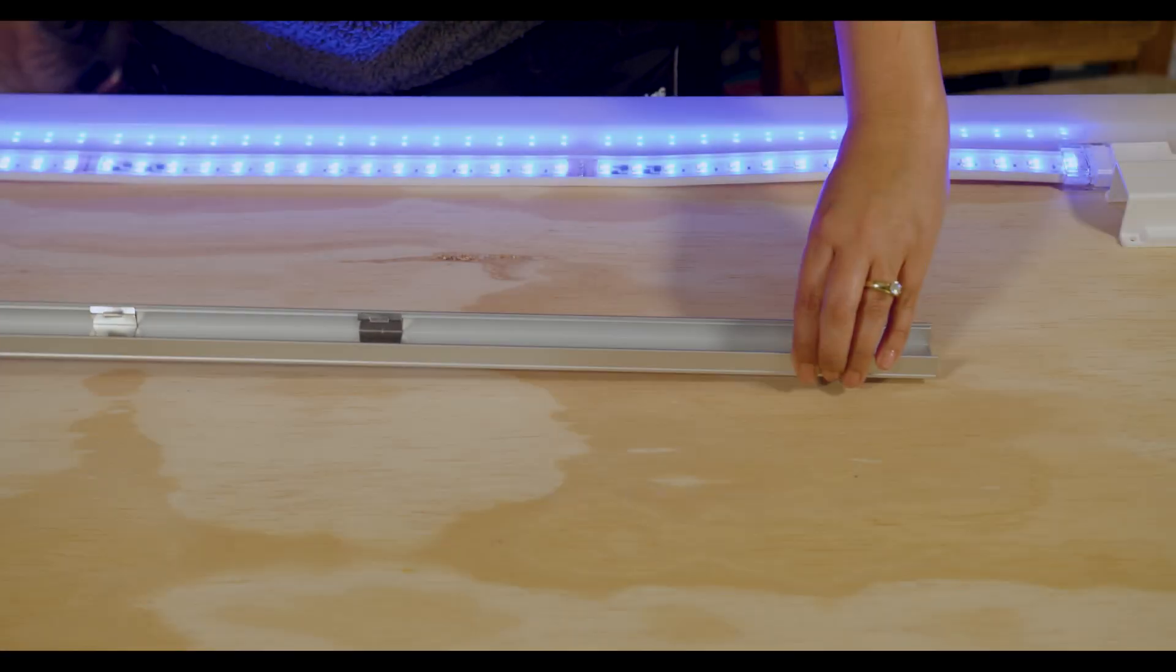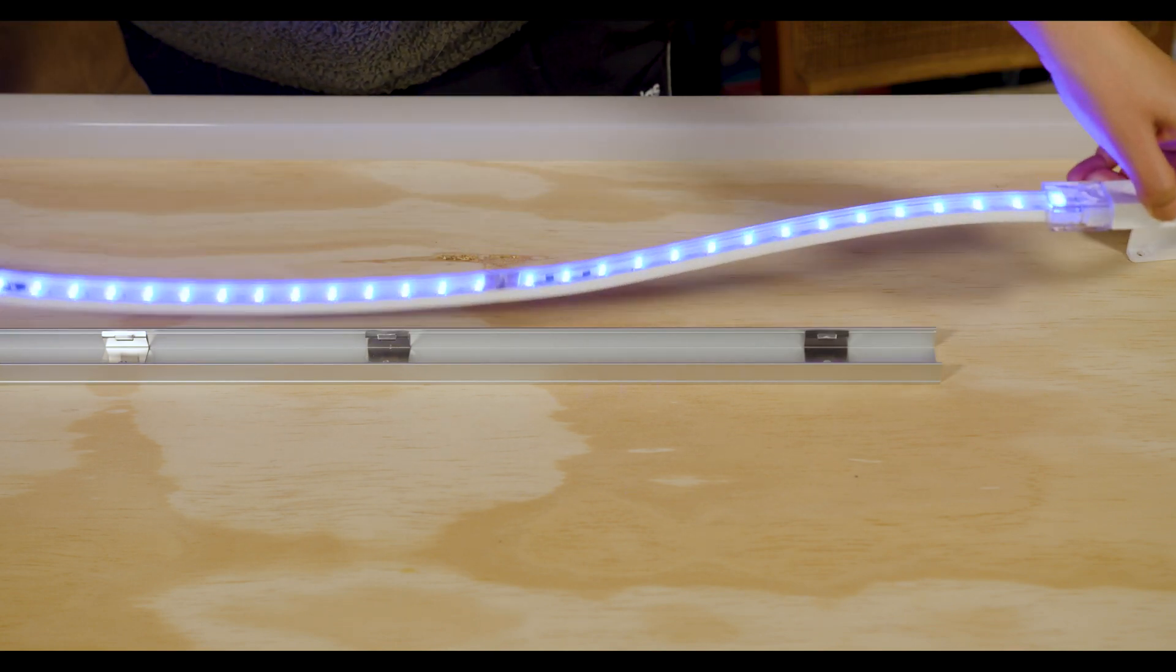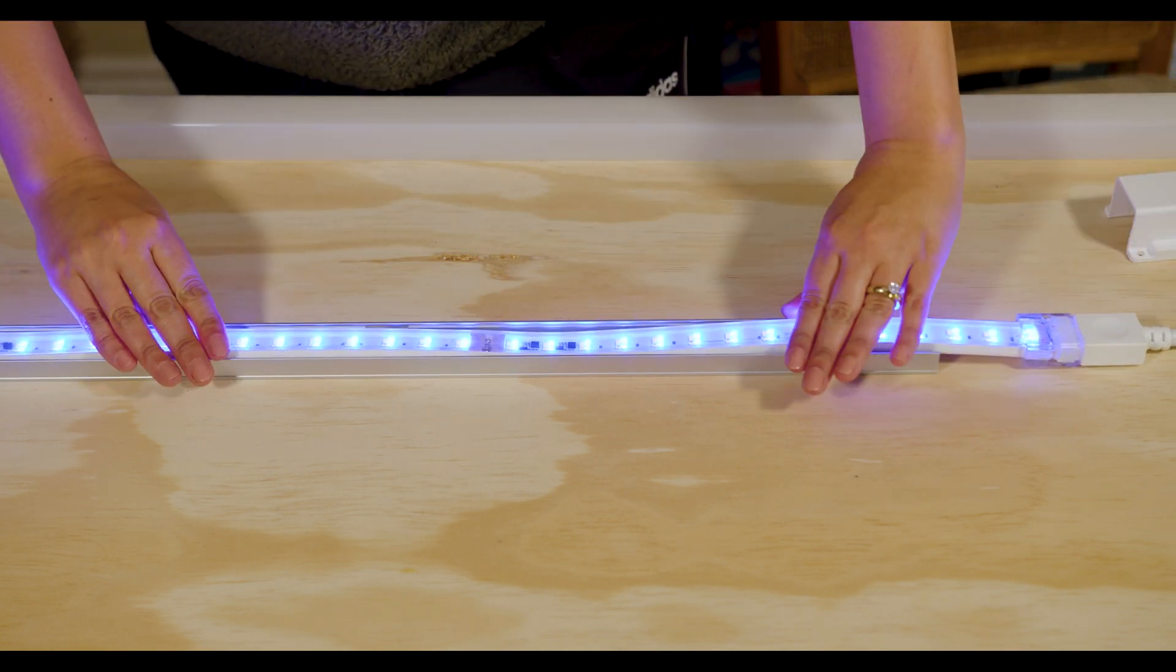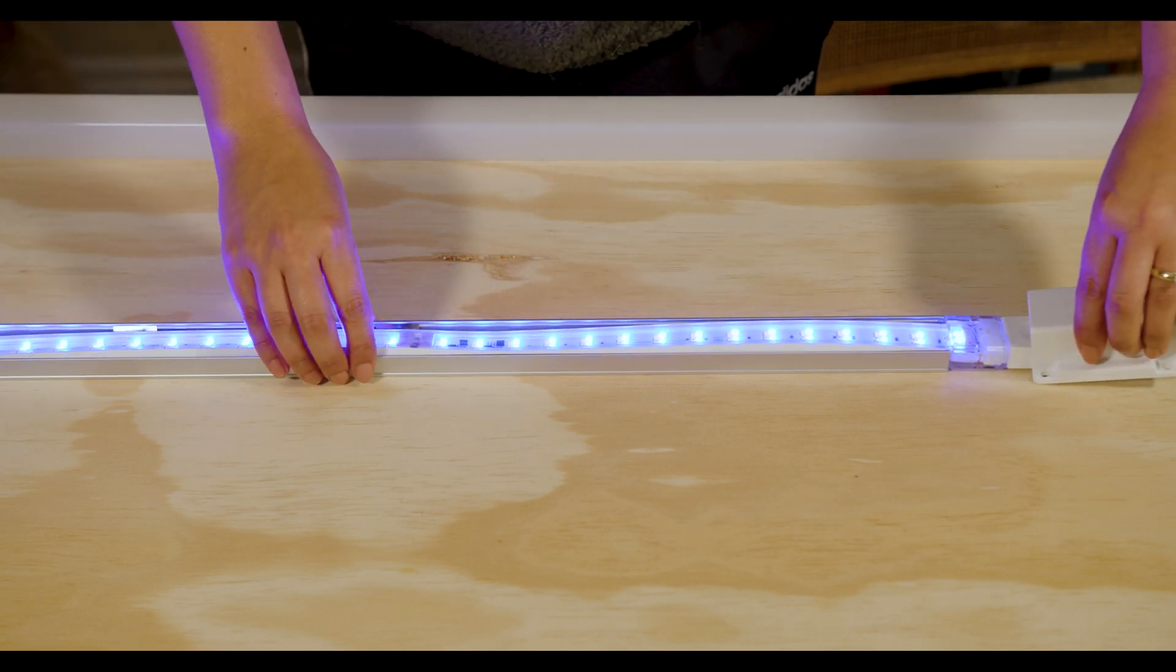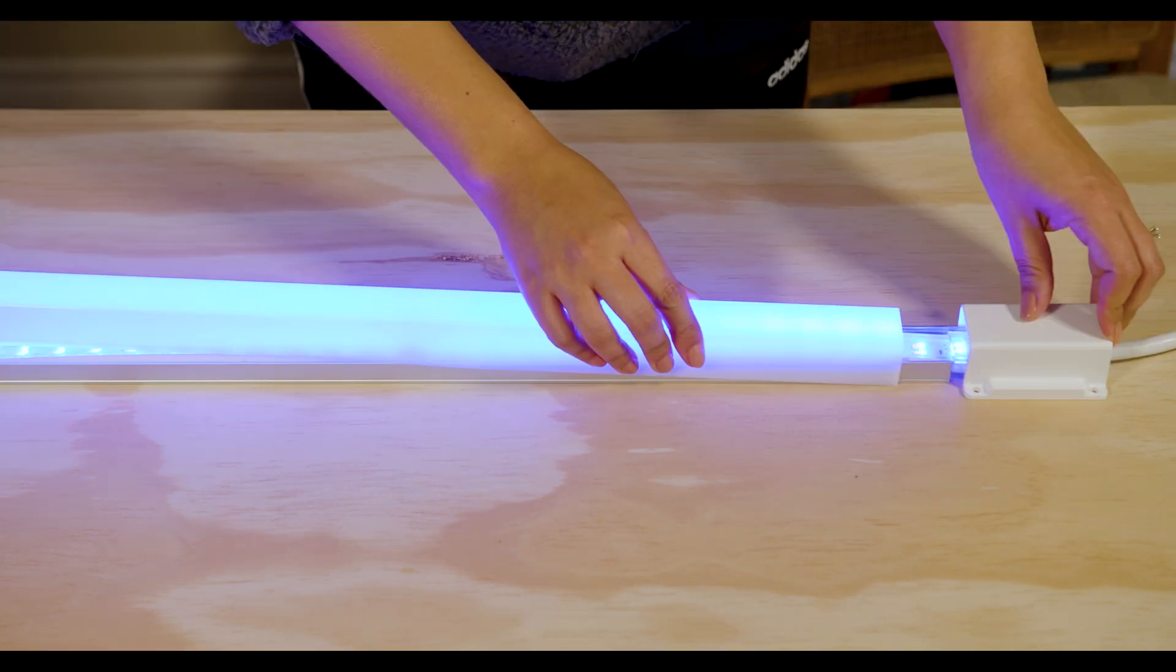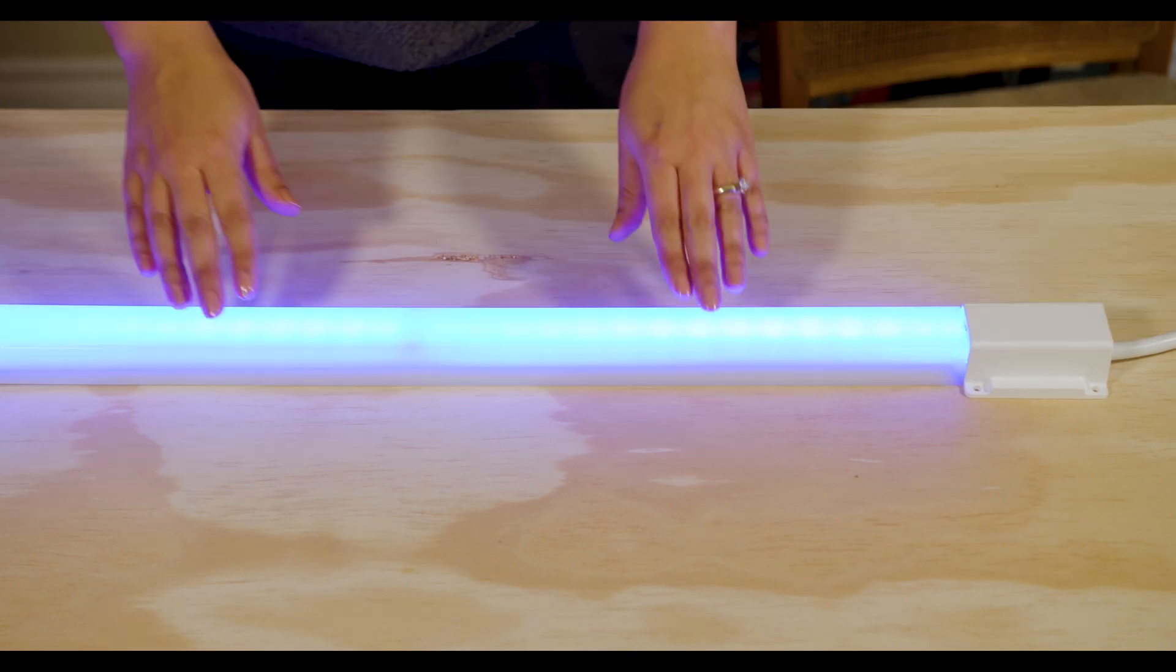If you want to add a V120 RGBW mounting channel, simply lay the V120 tape in, connect end caps, and overlay the acrylic frosted lens. This adds a soft, diffused glow to the V120 RGBW.